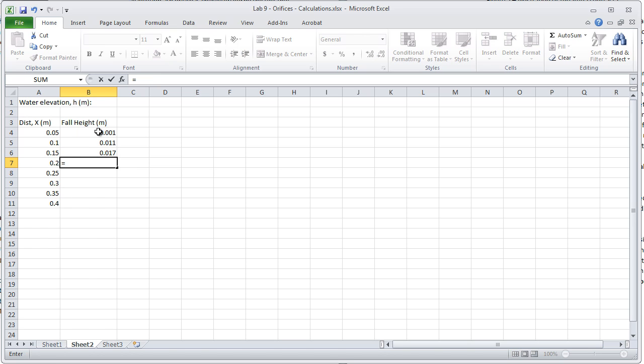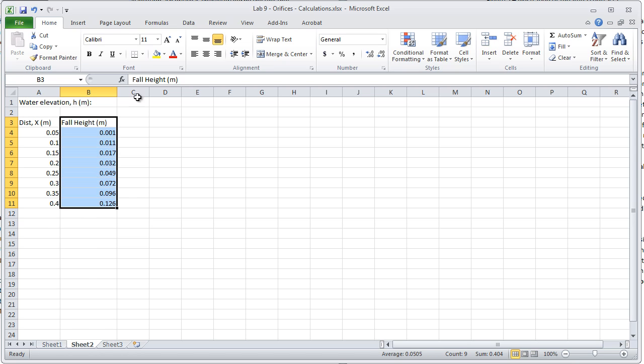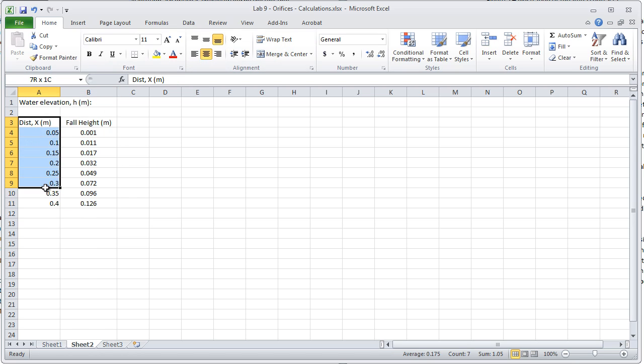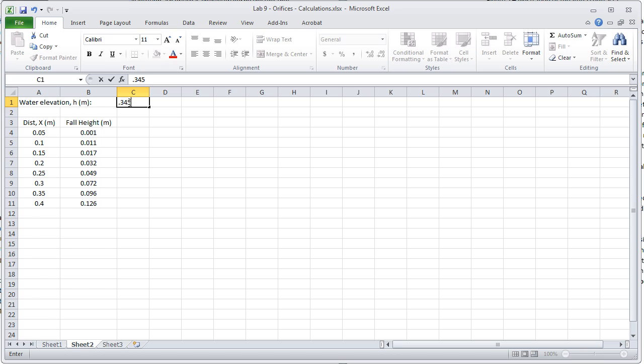So I'll enter in all of the data. This is just taken right off of the sheet that I prepared. And then the fall height that I had measured was 0.345 meters.